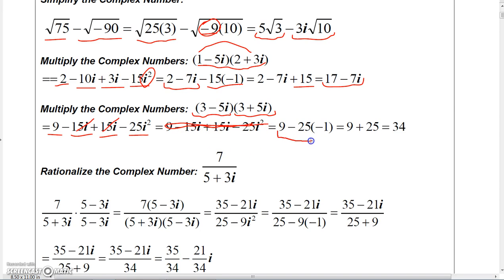...which is 9 + 25, which is 34. Now there's a reason I showed you this: I showed you this so that you would see that anytime you multiply these conjugates together, (a - bi)(a + bi)...